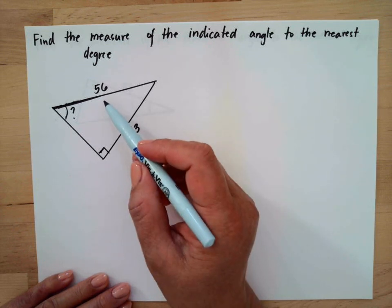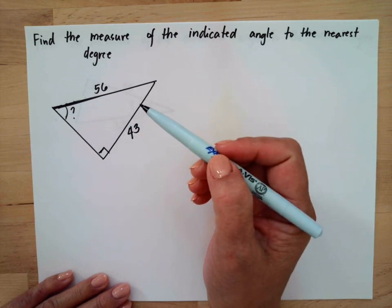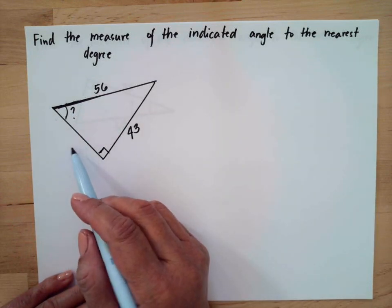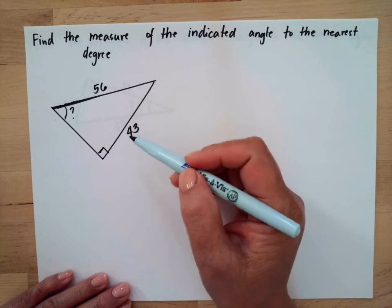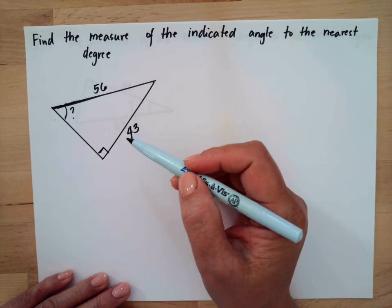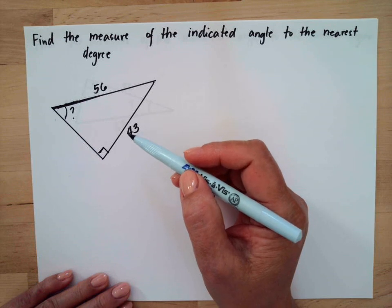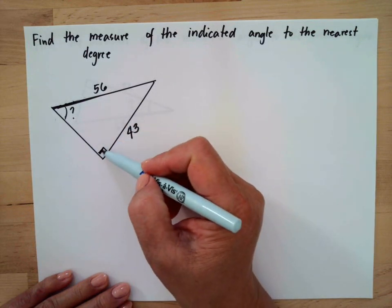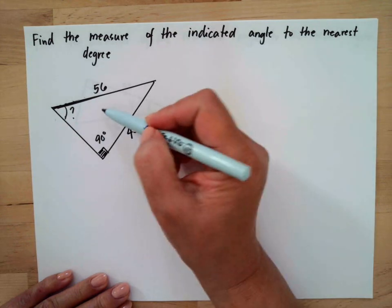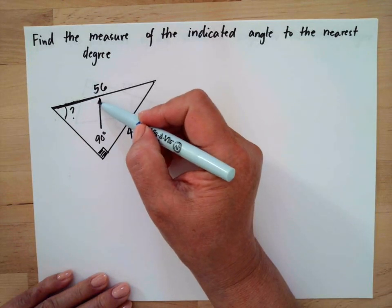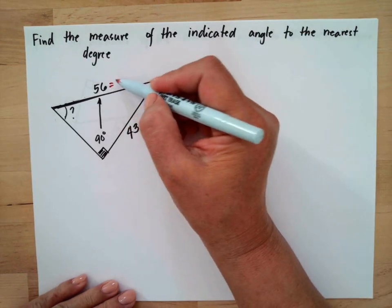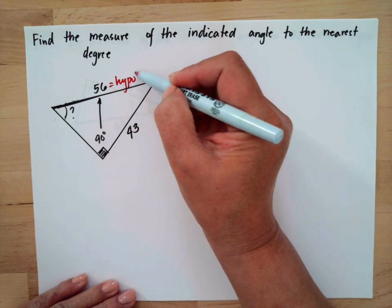Usually we say the hypotenuse is the longest side, but since one side is not given, we cannot determine which is the longest side. The other way we identify the hypotenuse is that it is opposite the 90-degree angle. So this is our hypotenuse.